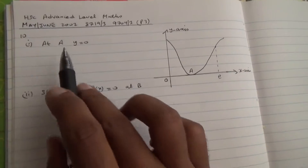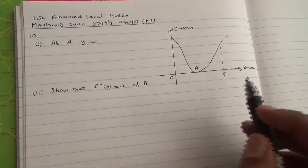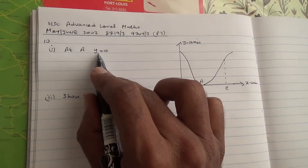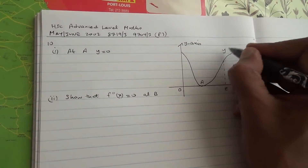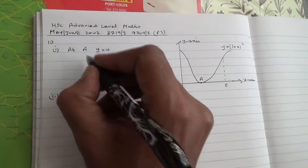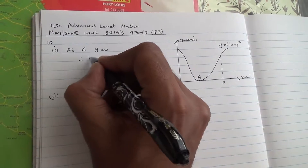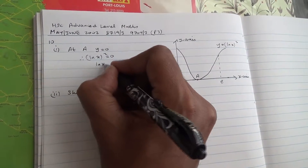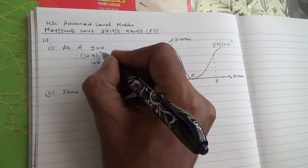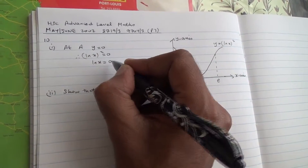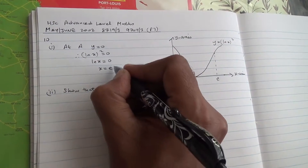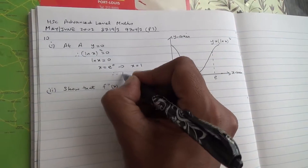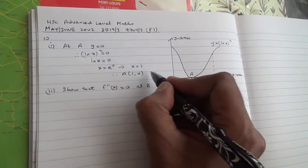For the first part, we need to find the x-coordinate of A. At this minimum point, the y-coordinate is equal to zero. Therefore, (ln x)² equals zero, which means ln x equals zero. Therefore, x is equal to e to the power of zero, indicating that x equals one. Hence, the coordinate of A is (1, 0).